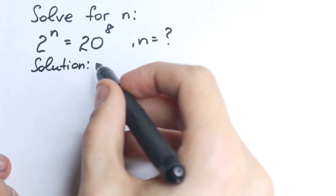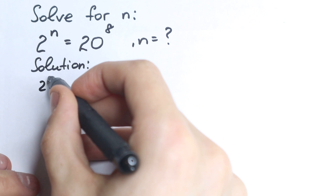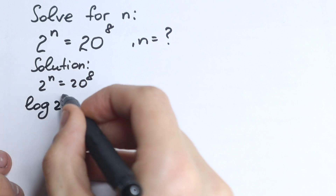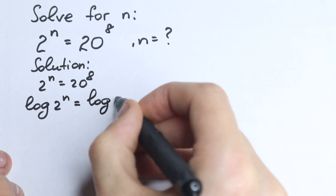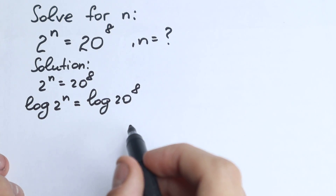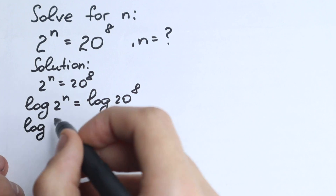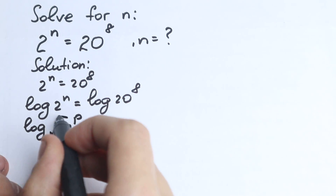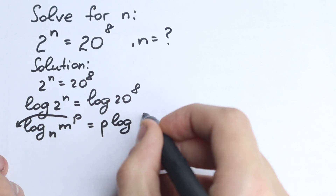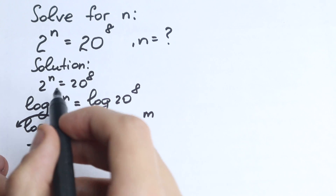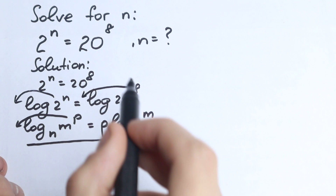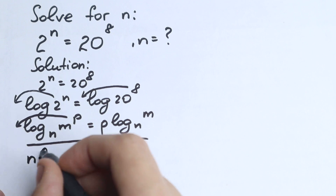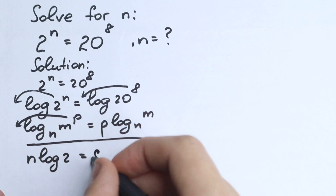Okay, this is the solution. So 2 to the n equals 20 to the 8. Let's apply log on both sides: log of 2 to the n equals log of 20 to the power 8. Now, using the log power rule — where log base n of m to the p equals p times log base n of m — the n comes down here and the 8 comes down here. So we have n log 2 equals 8 log 20.